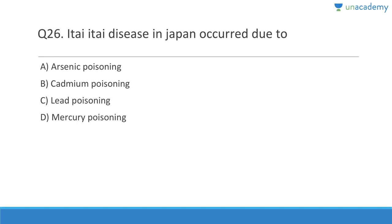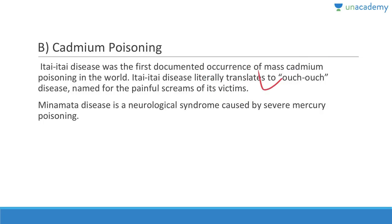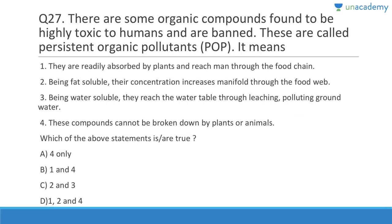Question 26: Itai-itai disease is related to cadmium poisoning — not mercury, which causes Minamata disease. Lead poisoning is called plumbism. Itai-itai disease was the first documented occurrence of mass cadmium poisoning in the world, and it literally translates to 'ouch ouch' because of the painful screams of its victims. Minamata disease is a neurological syndrome caused by severe mercury poisoning.